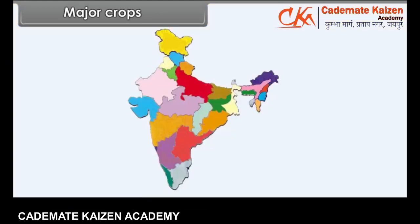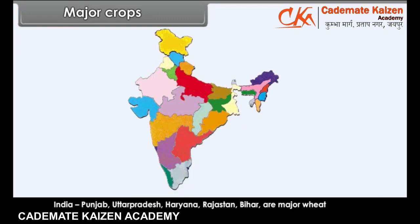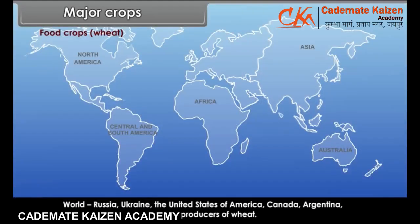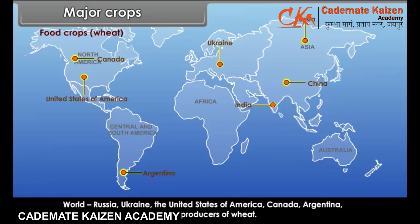Production areas in India: Punjab, Uttar Pradesh, Haryana, Rajasthan and Bihar are major wheat producing states. World producers: Russia, Ukraine, the United States of America, Canada, Argentina, China and India are important producers of wheat.